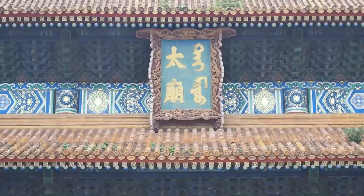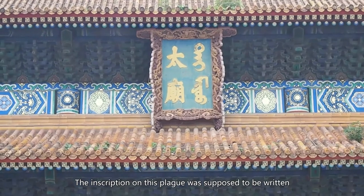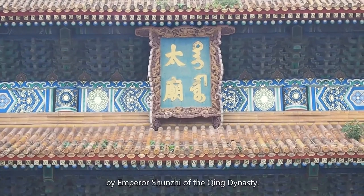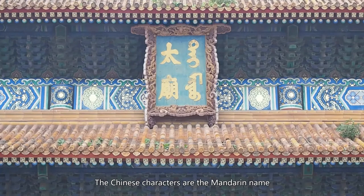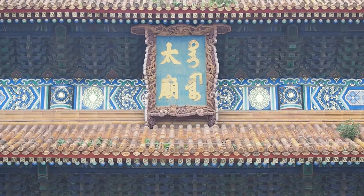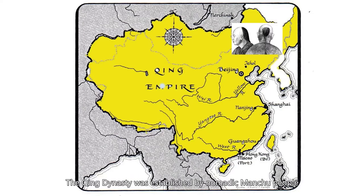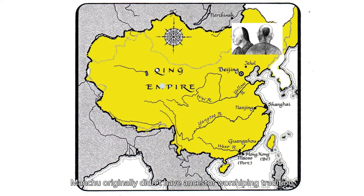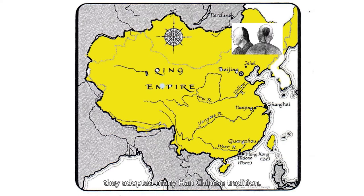The inscription on the plaque was supposed to be written by Emperor Shenzhi of the Qing Dynasty. The Chinese characters are the Mandarin name of the imperial ancestral temple, Tai Miao. The script next to these two characters is Manchu script. The Qing Dynasty was established by nomadic Manchu people from northeast China. Manchu originally didn't have an ancestor worshipping tradition, but when they established the Qing Dynasty, they adopted many Han Chinese traditions.